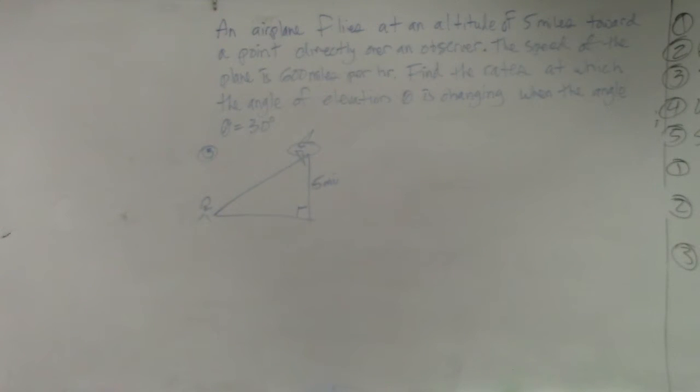So in this example, ladies and gentlemen, it says an airplane flies at an altitude of five miles toward a point directly over an observer. The speed of the plane is 600 miles per hour.